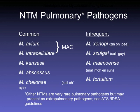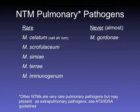The infrequent NTM pathogens include xenopei, szulgai, malmoensi, and M. fortuitum. The rare pathogens include Mycobacterium terrae and Mycobacterium immunogenum. At one institution, we had an immunogenum bacteremia in a dialysis patient — it turned out to be water contamination of dialysis filters. Occasionally a rare mycobacterial pathogen can become a true pathogen in an unusual circumstance.